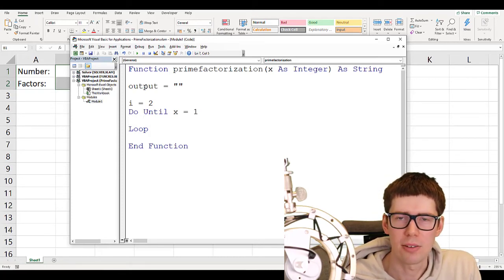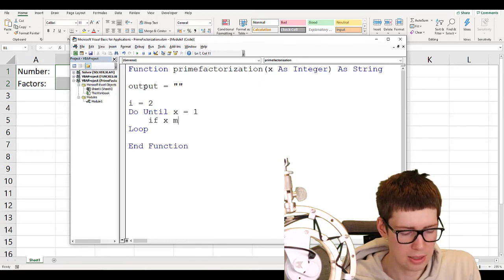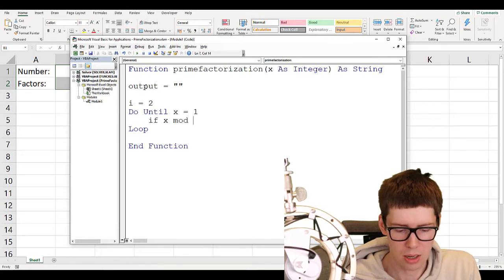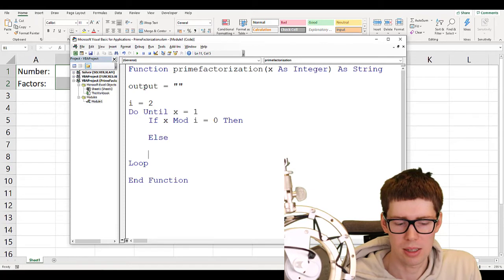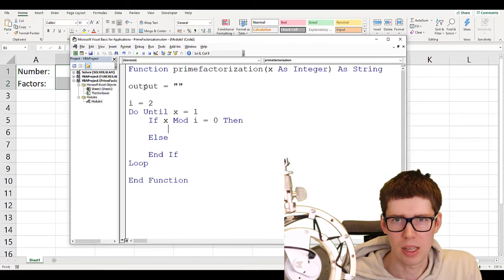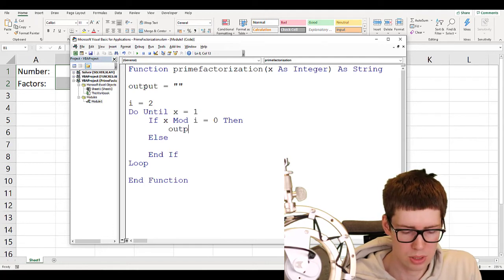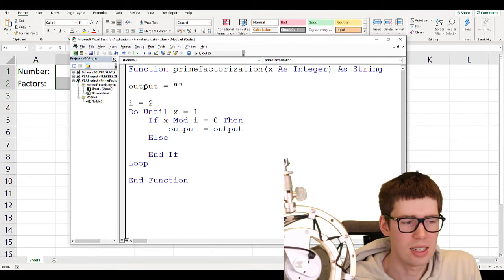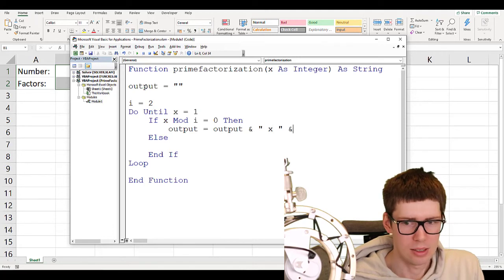Next, I need to determine if x can be divided by the particular i that we are trying out. So I need to use an if function. If x mod i is equal to 0, then we need to do certain things. We need to document that i is a factor of x. And we can do that using the output string we just made. So output is equal to output. And then string concatenation. I'm adding a string here, white space, x, which is going to represent not variable x, but the multiplication sign, or perhaps you could use the comma, doesn't really matter. And then you're going to add the i that you're looking at.